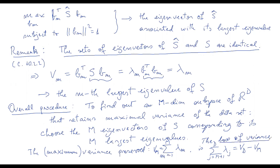To summarize: PCA takes a data set originally in d dimensions and compresses it into m dimensions, preserving as much information as possible — formulated as preserving maximum variance. You choose the m eigenvectors of S corresponding to the m largest eigenvalues, and the loss of variance, normalized, is simply 1 − Vm/Vd. There will always be some loss of information, but PCA minimizes this loss optimally.